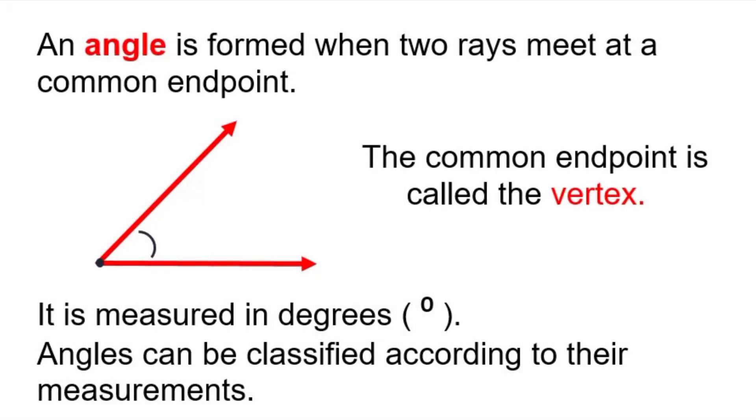Let's study about angles. An angle is formed when two rays meet at a common endpoint. The common endpoint is called the vertex. An angle is measured in degrees. It can be classified according to their measurements.